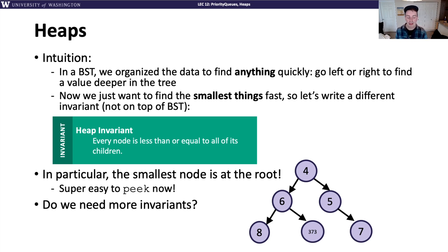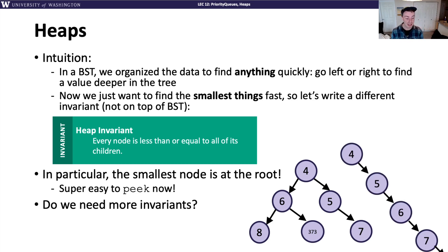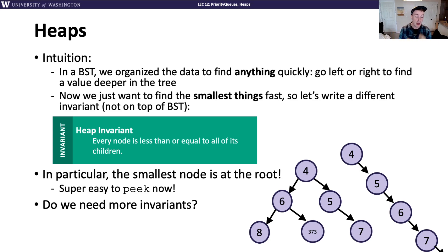The question is: is the heap invariant the only invariant we need? We haven't yet explained how to implement add and remove-min efficiently, but it turns out we need one more invariant. There are valid heaps that aren't actually efficient — just like degenerate binary search trees, we could end up with degenerate heaps. We want to limit the height of our heap so that we can have efficient runtimes everywhere.